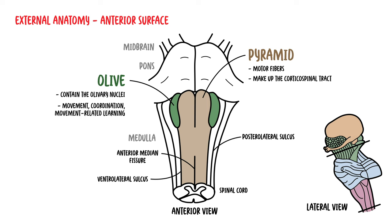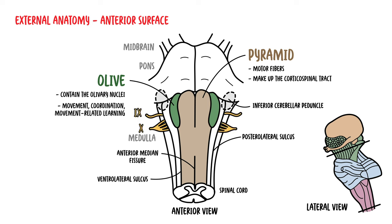Posterior to the olives are the inferior cerebellar peduncles, which connect the medulla to the cerebellum. The ventrolateral sulcus and the posterolateral sulcus also have cranial nerves coming out of them. At the medulla, the cranial nerves to remember are cranial nerves 9, 10, 11, and 12 — the last four.